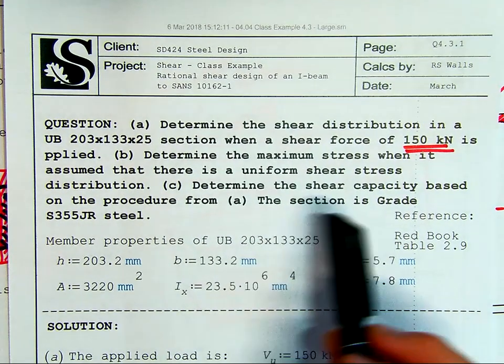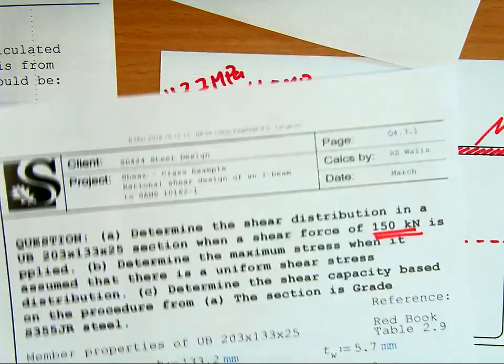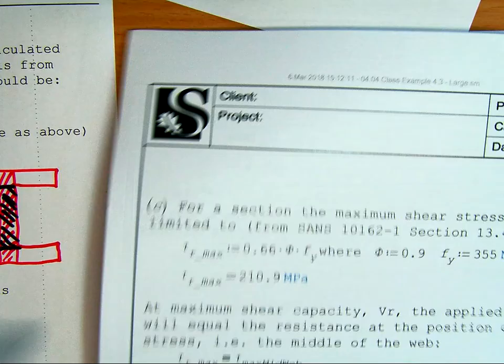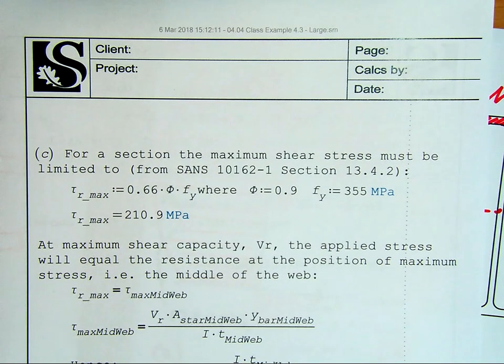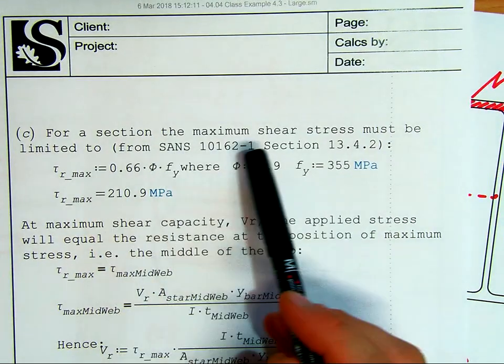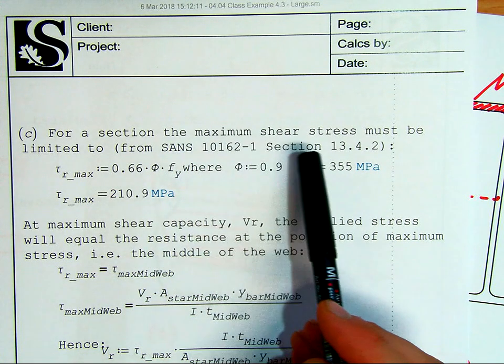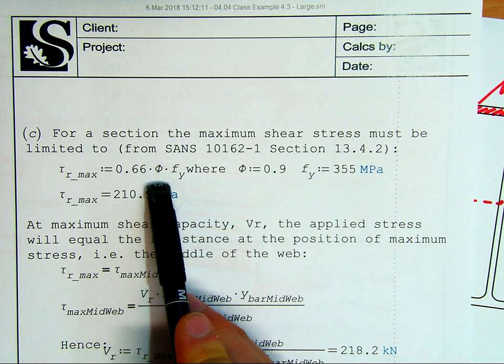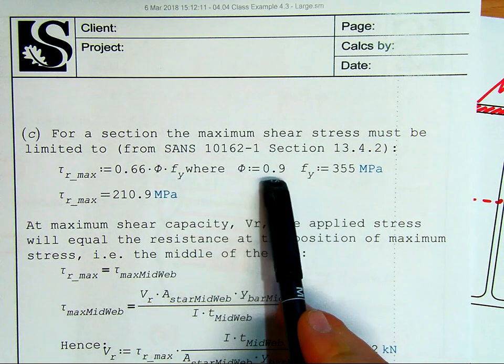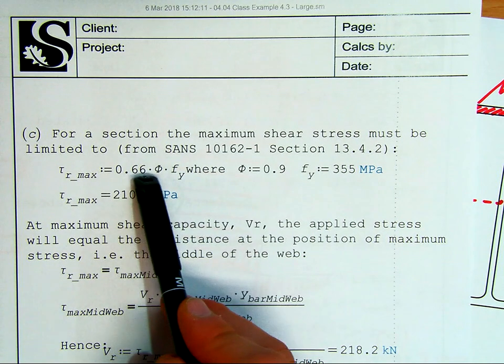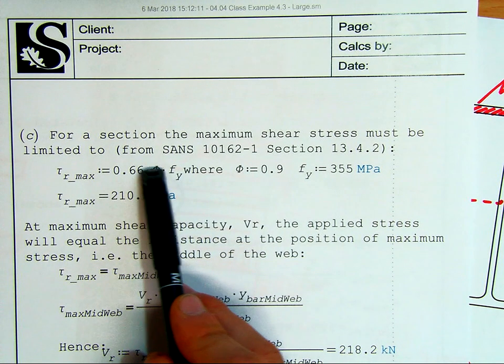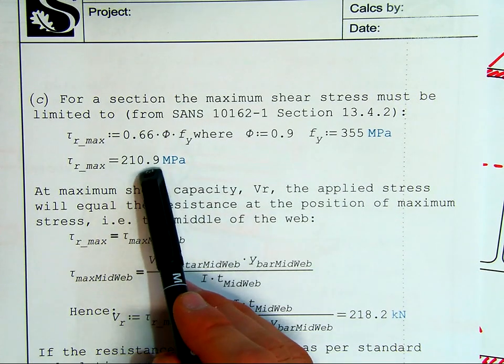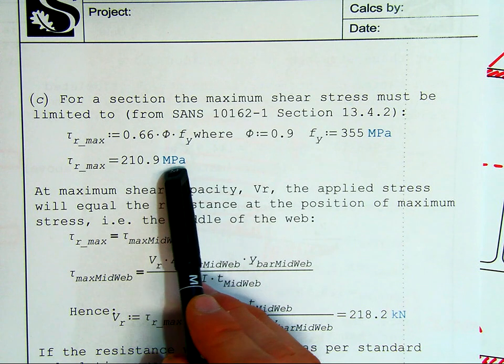Determine the shear capacity based on the procedure from A. So, using a shear distribution, how can we calculate the capacity of this section? Well, firstly, our South African code. For a section, the maximum shear stress must be limited to, and this is from SANS 10162 in section 13.4.2. Our maximum shear stress is 0.66 times phi times FY, where phi is 0.9 and there's our yield stress for 355. Our shear strength is normally about 60 to 66% of our tensile strength, so we have to limit our shear stress to 210.9.